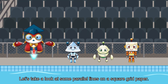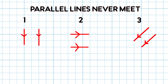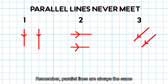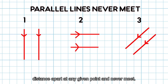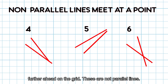Let's take a look at some parallel lines on a square grid paper. Remember, parallel lines are always the same distance apart at any given point and never meet. Look at these lines! If they continue growing, they will meet further ahead on the grid. These are not parallel lines.